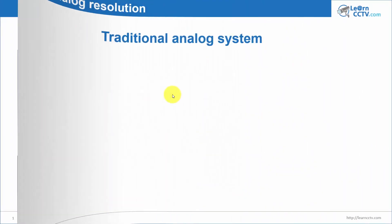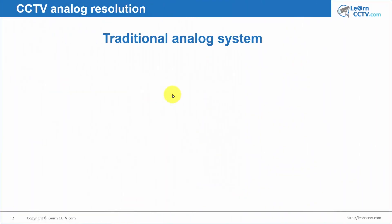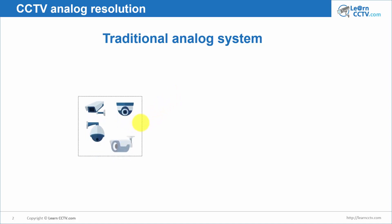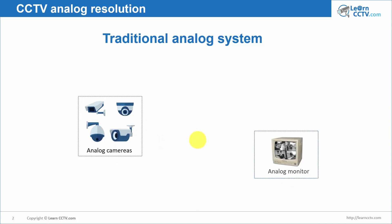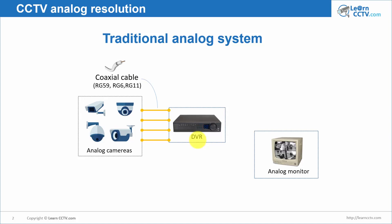Let's start understanding the traditional analog system. When you have a system like this, for example, with different cameras — box cameras, dome cameras, PTZ, and bullet cameras — and then you have an analog monitor, a traditional monitor. Then you have your DVR, and you connect cables from the cameras to the DVR. Four cables, one per camera. Those are coaxial cables: RG59, RG6, or RG11.